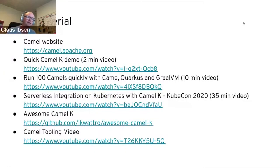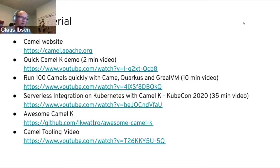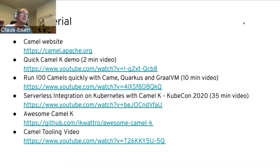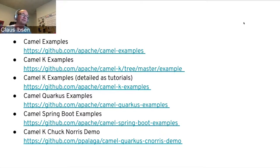Where can you find more information? There are links in the slides. There is something called Awesome Camel K — a community-maintained collection of links to great material on Camel K. Christina Lynn also just posted a video about the awesome tools she found around Camel. The examples are generally on GitHub under Apache Camel. And there's a nice Chuck Norris demo by Peter Palaga which uses KNative and provides a step-by-step guide on how to install and run it.